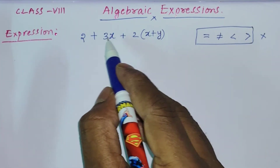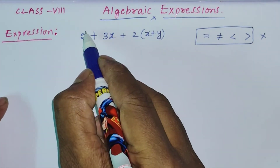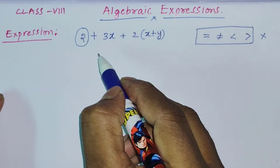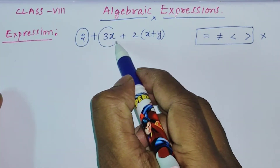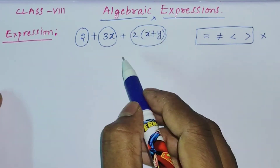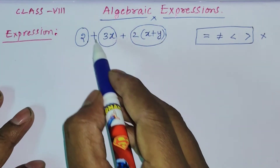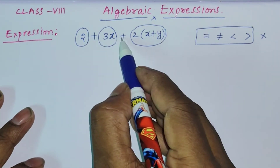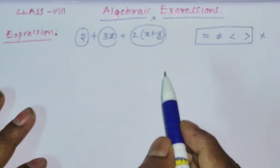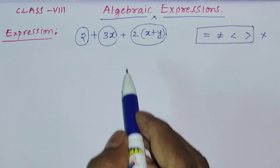If you see this expression, this is the first term, this is the second term, and this is the third term. So in this expression we have three terms. The plus and minus signs are operators, x and y are variables, and 2, 3, and n are all constants.